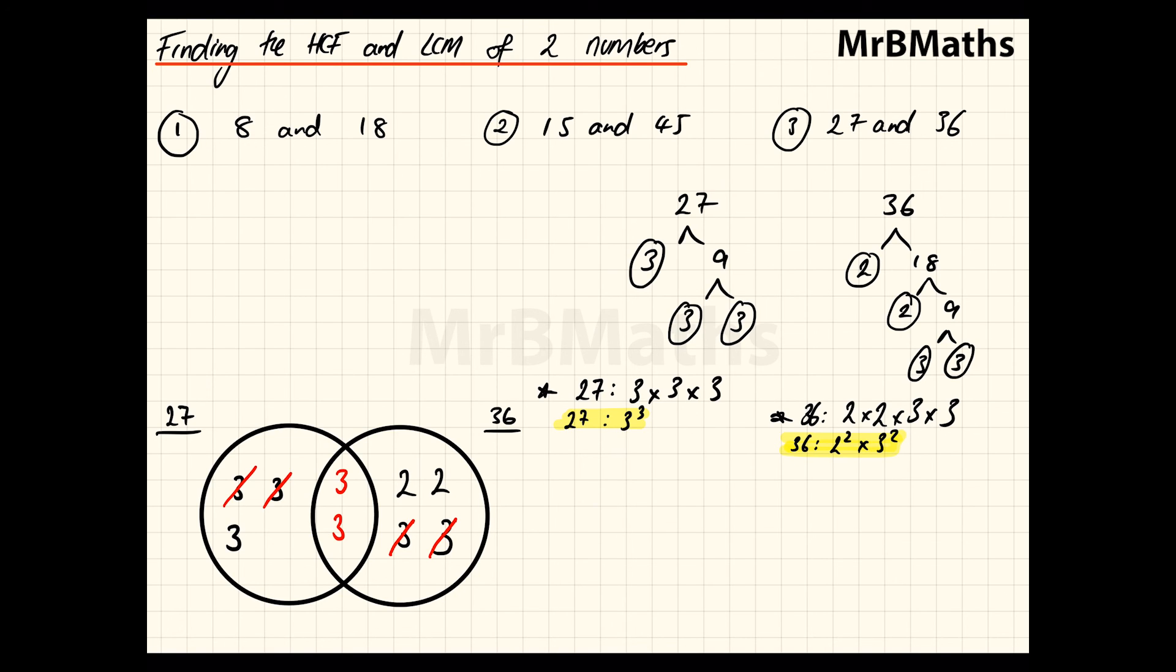I then go and write here. The HCF is all of the numbers in the center multiplied by each other. So, in this case I've got 3 times 3, which gives us the HCF of 9. And then I have the LCM, which is every number that is not crossed out times by each other. So, 3 times 3 times 3 times 2 times 2. So, 3 times 3 times 3 will give us 27. And then 27 times 4. 108. So, you should have got your HCF as 9. And your LCM of 108.